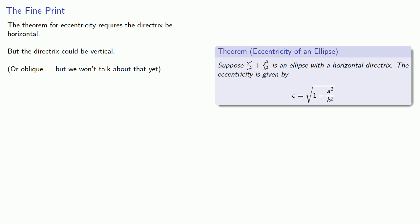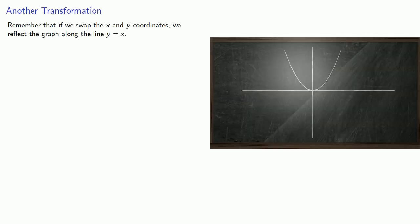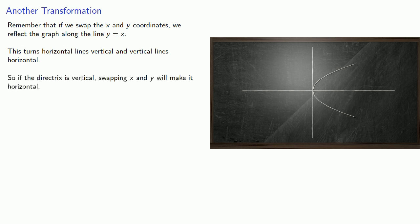Well, if our directrix is vertical, what can we do? So remember that if we swap the x and y coordinates, we reflect the graph along the line y equals x. And this turns horizontal lines vertical and vertical lines horizontal. So if the directrix is vertical, swapping x and y will make it horizontal.